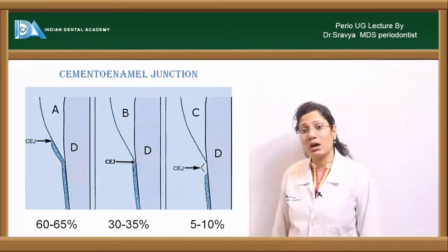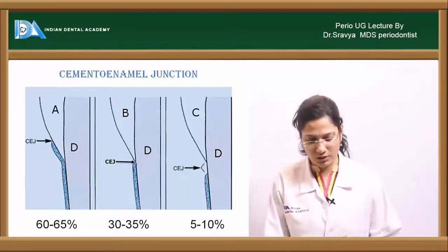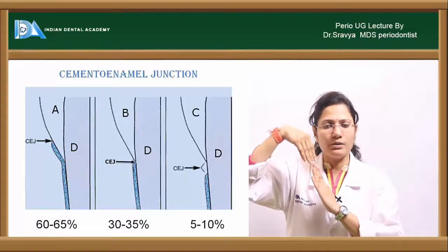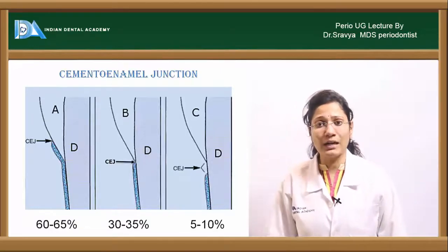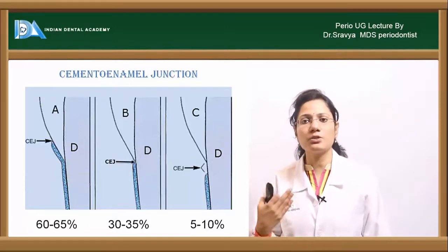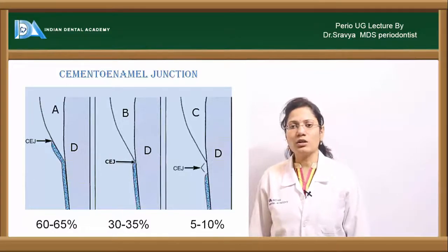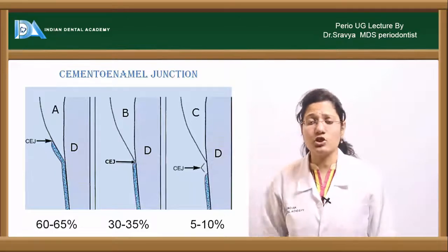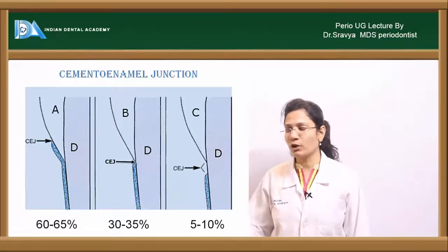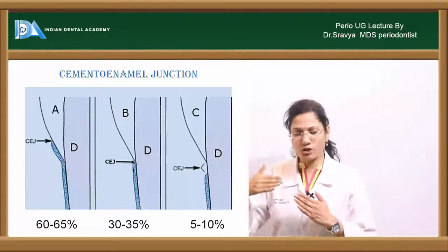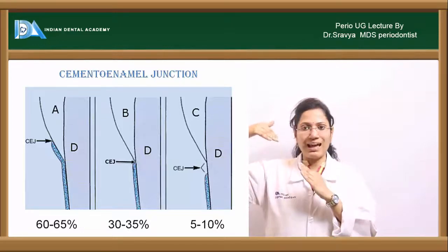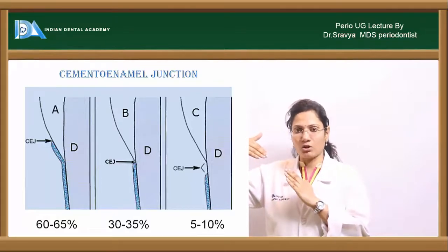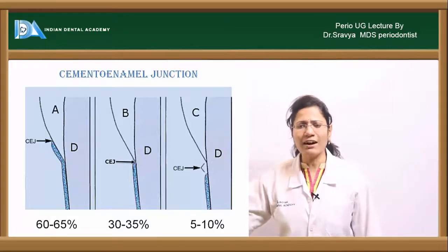The second type is the butt junction, where cementum and enamel meet at exactly one point, seen in about 30–35% of cases. The third type is the gap junction, where cementum and enamel do not meet, leaving dentine directly exposed. This is seen in only 5–10% of cases.